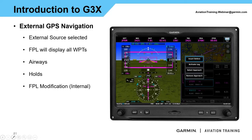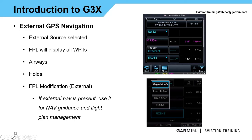On internal nav, we can select a waypoint and choose insert before, insert after — if it's an airport, select an approach or remove an approach. Similar items to what we see on the externals. When running the external nav source, you can't add, delete, or do a whole lot with the flight plan — those options are grayed out. But we can still get information: selecting a waypoint, 'waypoint info' is still available. If it's an airport and I'm trying to find weather, I can still do that off the G3X page. Everything else flight-plan-management-wise needs to be done on the external nav source.